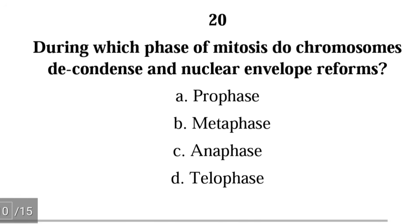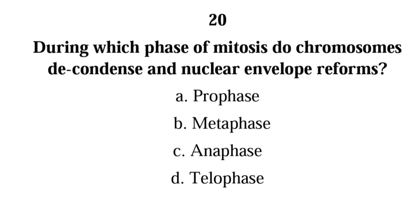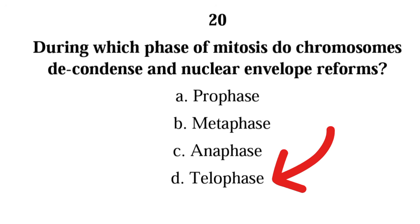Question 20: During which phase of mitosis do chromosomes decondense and the nuclear envelope reform? A) prophase, B) metaphase, C) anaphase, D) telophase. The correct answer is D) telophase. Telophase is the last phase in mitosis. During this phase, chromosomes decondense back to chromatin, the nuclear envelope reforms, and the nucleolus reappears.